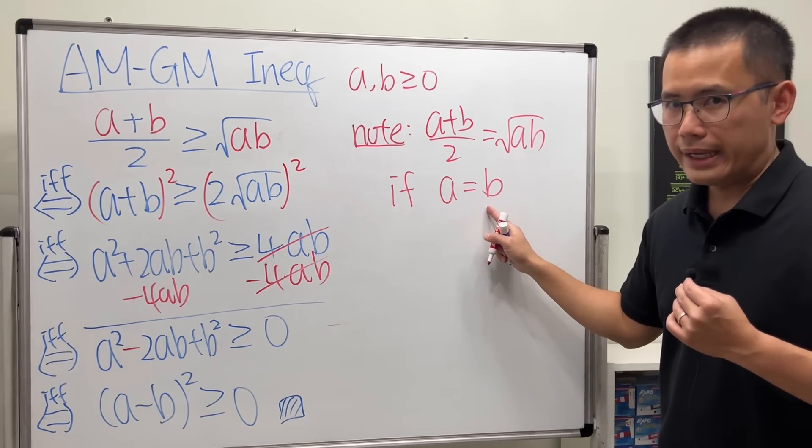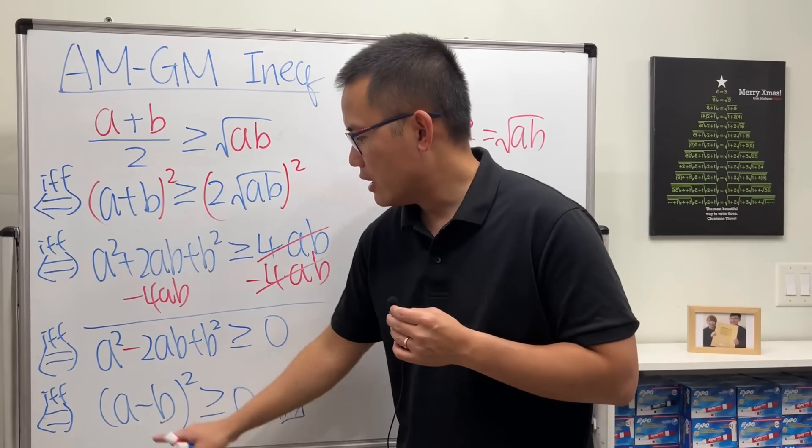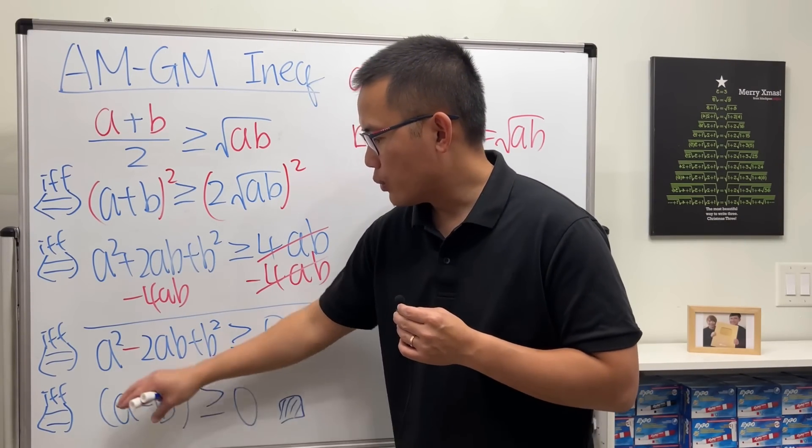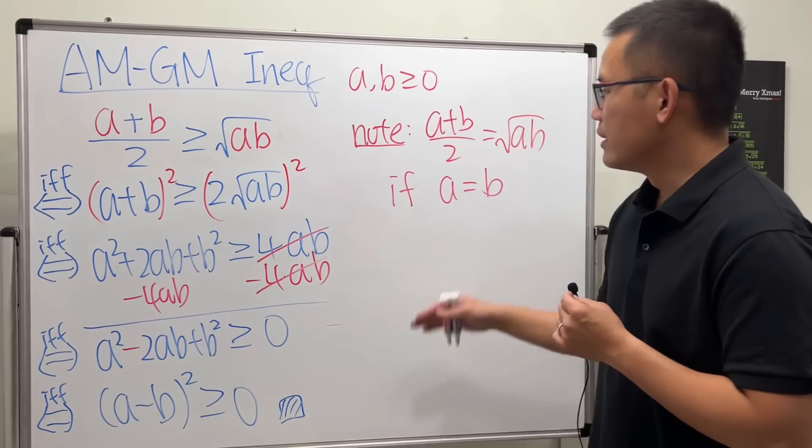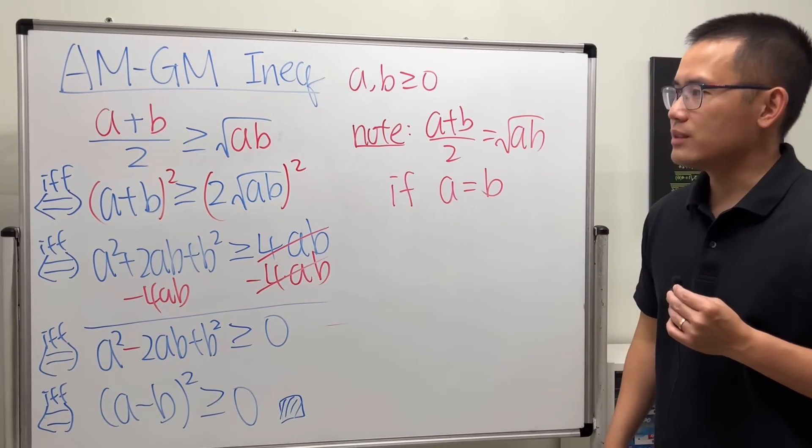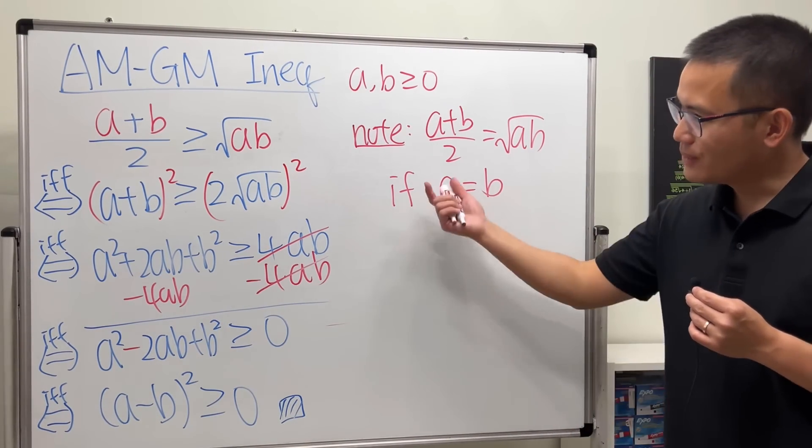Why? Because you can see that right here: if a and b are equal, when you subtract them you get zero. Zero squared is equal to zero, so that's the case when they are equal. So that's it.